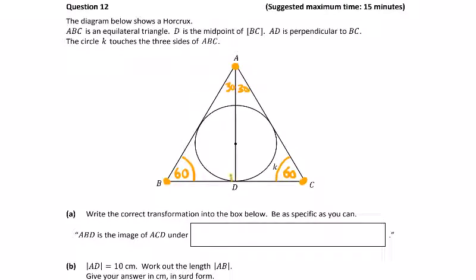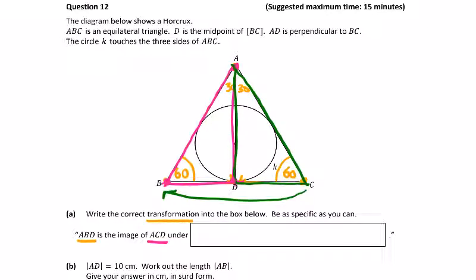At the top, let's split it into two 30s because of the perpendicular down the bottom. So this is our triangle. We're asked to write the correct transformation into the box below. ABD, so the triangle ABD, is the image of ACD. What has happened to it? Well, A and D haven't moved, C has gone to here. So this looks like axial symmetry in the line AD.